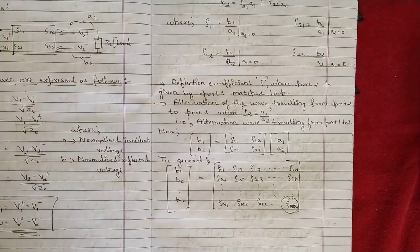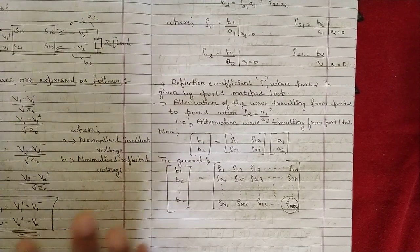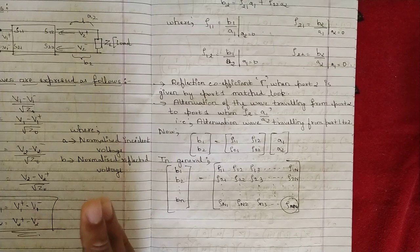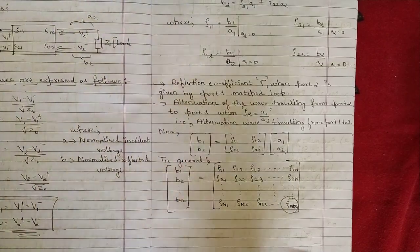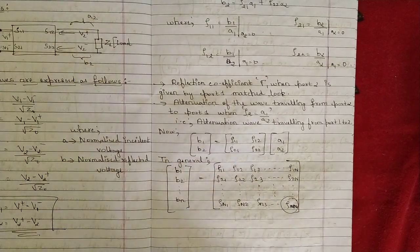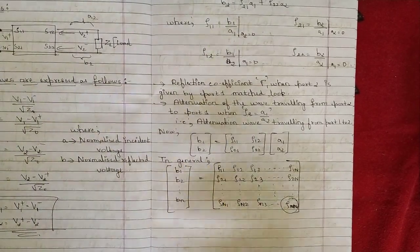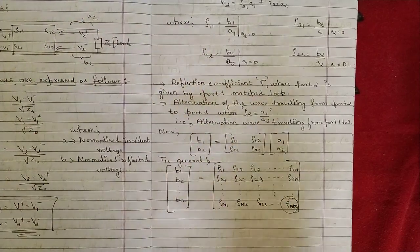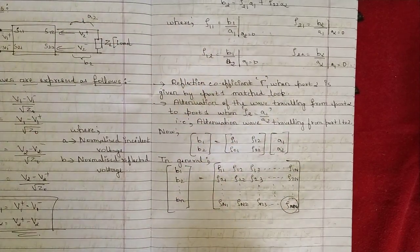That was it for this video — just the introduction part of this module on microwave networks. With respect to two-port networks we discussed the different parameters of scattering matrix and how it is formed using normalized incident and reflected voltages. I wanted to discuss one more topic but it would make the video too lengthy, so I'll cover that in the next video. Like, share, and subscribe to our channel. Thank you.